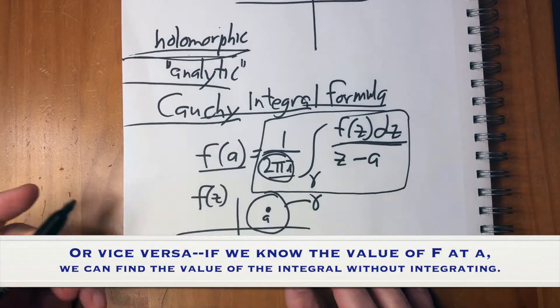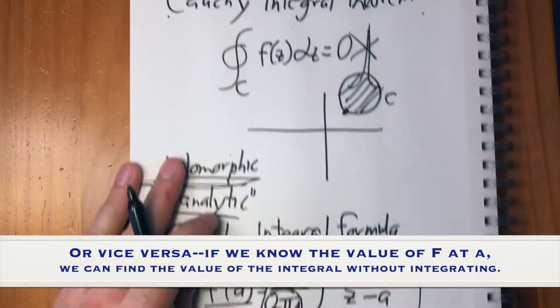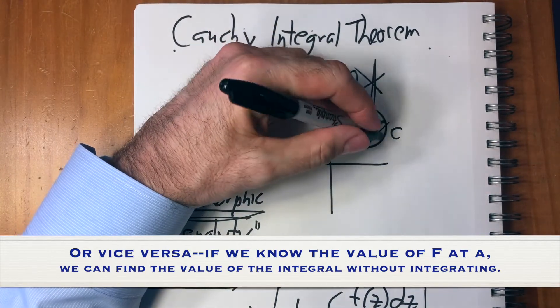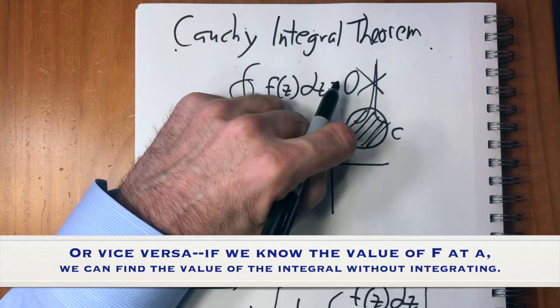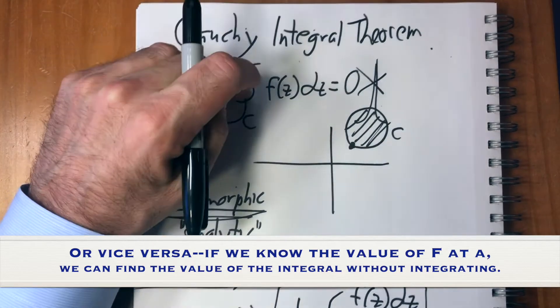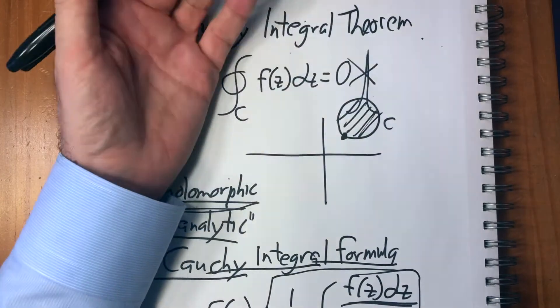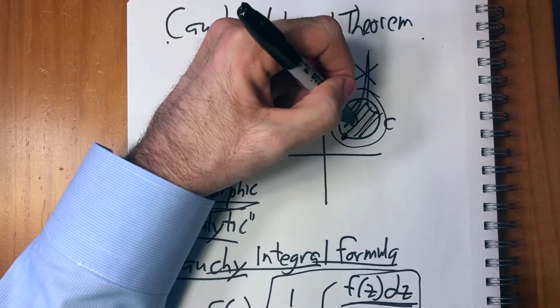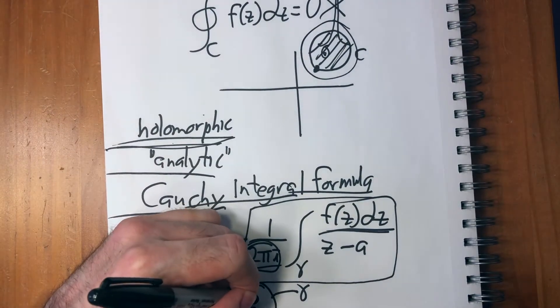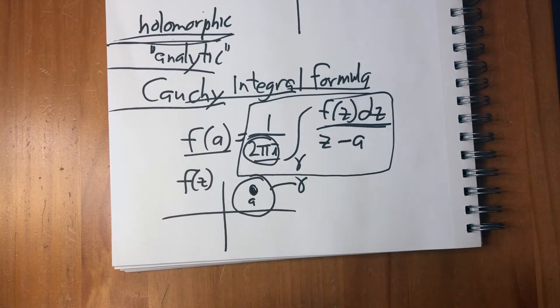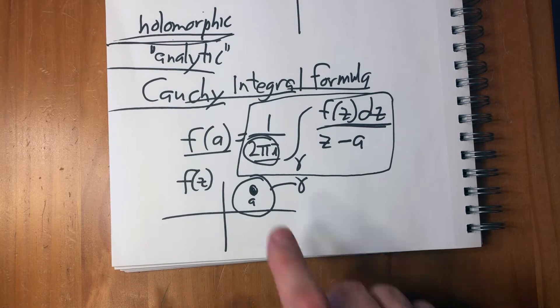And the reason the two pi i is there is because knowing that a closed curve, a closed line through the function is zero, if that's true for one, it's going to be true of all of them. It can be true of this one, this one, this one. So we can make it as small as we want around the point A.